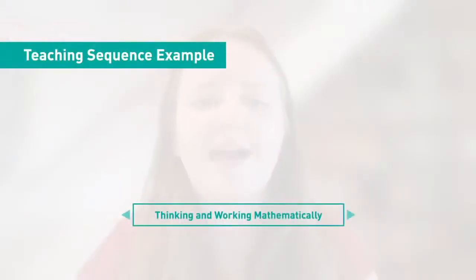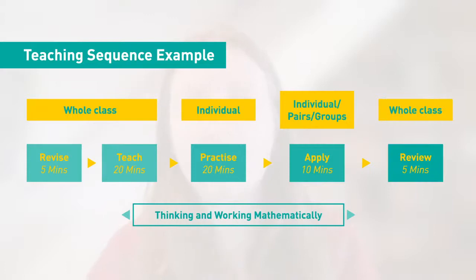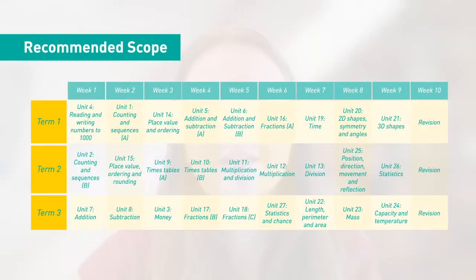The teaching sequence has largely been kept the same as in the first edition, with five components acting across the different parts of maths teaching: revise, teach, practice, apply and review. These sections of the lesson take place in different components — whether the student's book, workbook or teacher's guide — and in different classroom organisation formats: whole class, individual, pair and group work. There are 27 units per stage, split into the different substrands, and we offer a scope and sequence with a week of flexible revision teaching and the ability to customise the curriculum to the needs of your school.